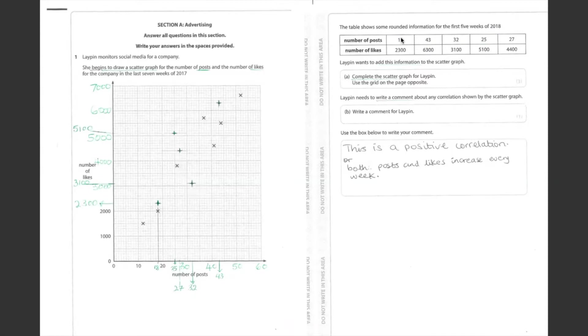First, the number of posts is 18, and the number of likes is 2,300. The first one, this is where 18 is. We draw a line up, and this is where 2,300 is. We draw it to the side, and this is where it meets. You do the same thing until you complete the information on this table.